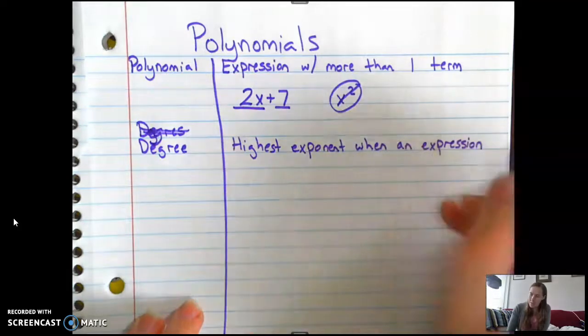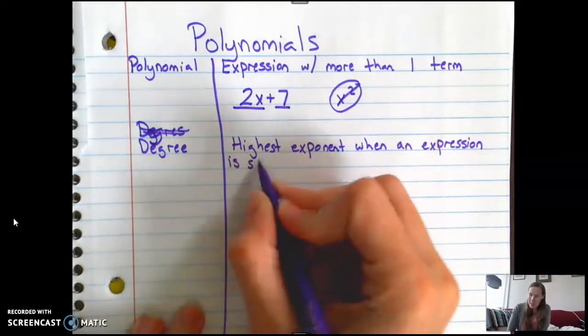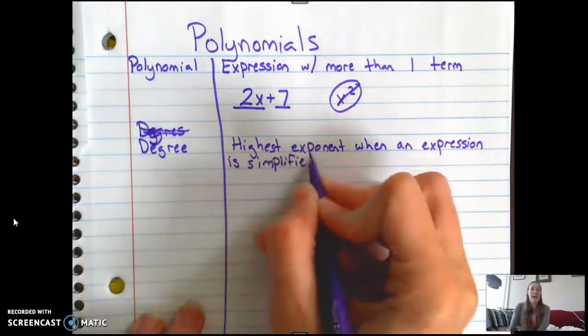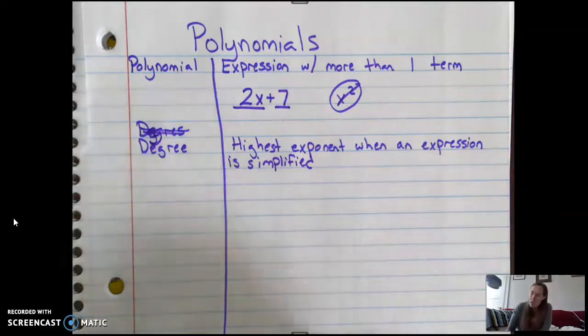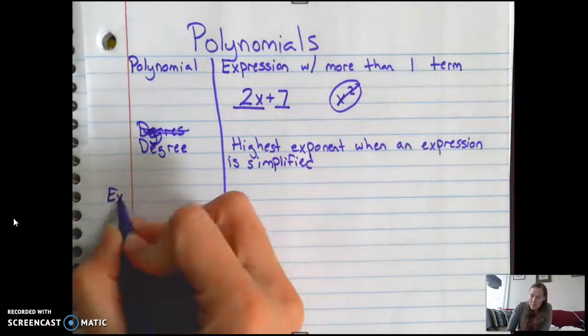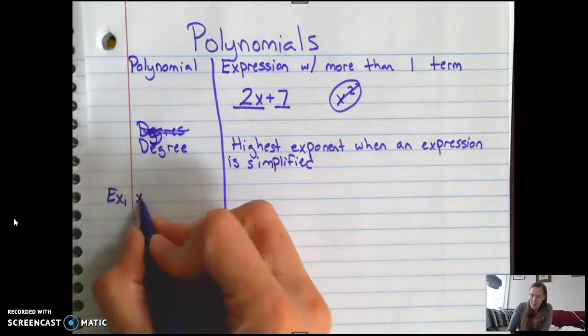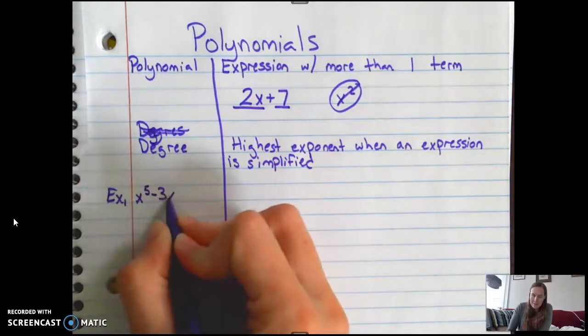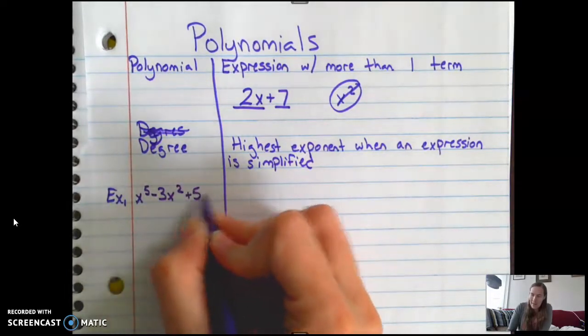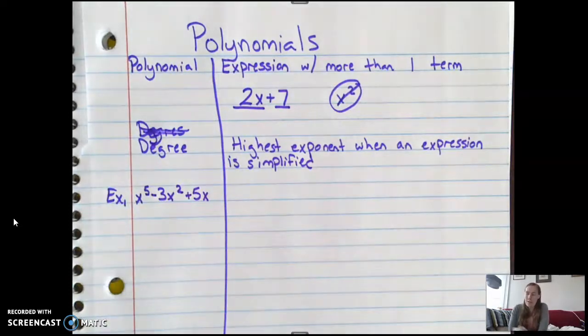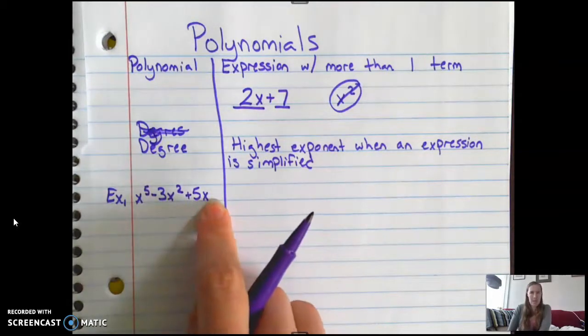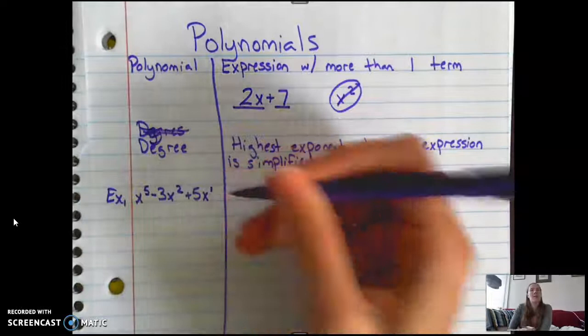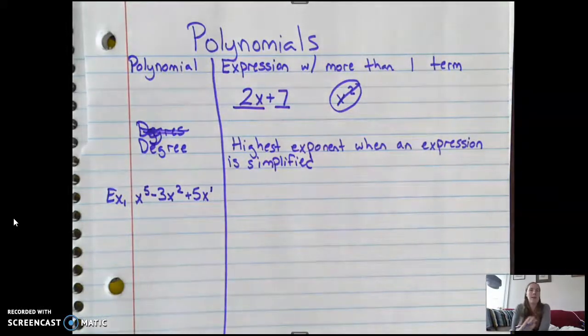the degree is the highest exponent when an expression is simplified. So what we were doing this last week is we were practicing simplifying polynomials. We were adding them, subtracting them, multiplying them. So now we're going to see what can we do after we have this simplified polynomial. So for example, say that we had the polynomial x to the 5th minus 3x squared plus 5x. Well, we want the highest degree. So I have a 5, a 2, and a 1. So what do we think this degree could be? It's 1 because it's that assumed 1 because mathematicians are lazy.